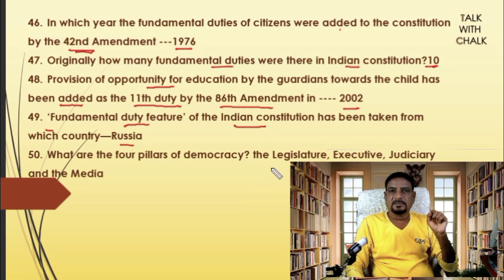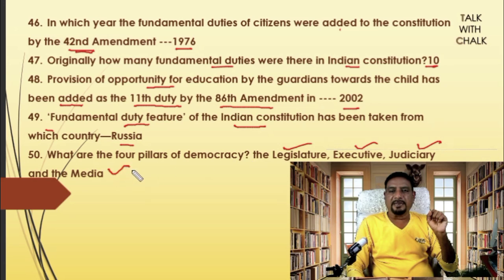The four pillars of democracy are: legislature (which makes laws), executive (which implements laws), judiciary (which delivers justice and punishment), and media/press (which controls public information).